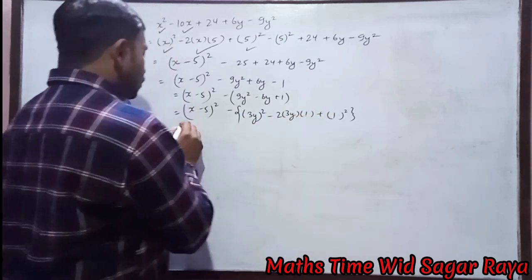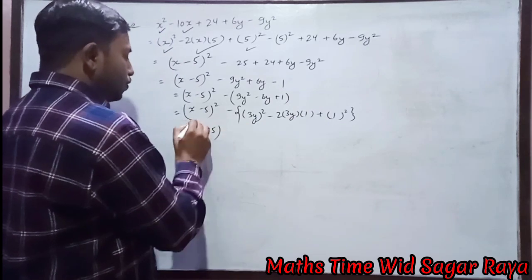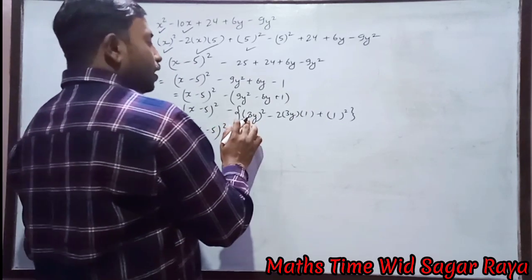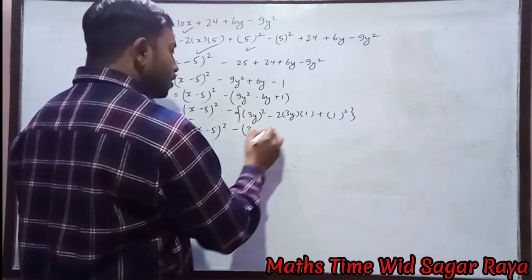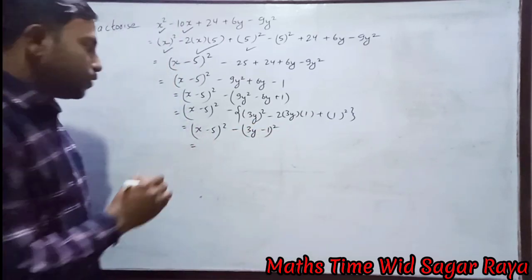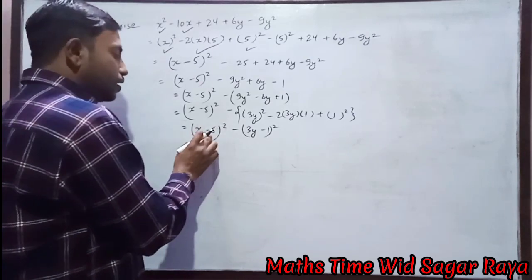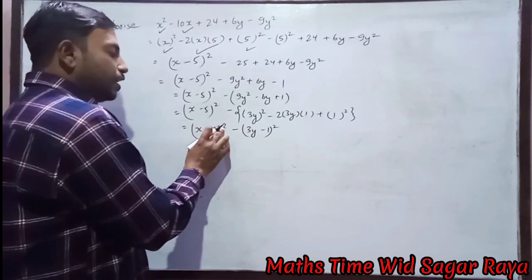So let's write 1. Then a² - 2ab + b² means (a - b)². After this, what we can do is take this whole as a² minus this whole as b².